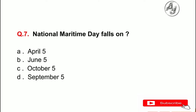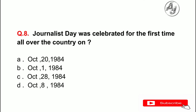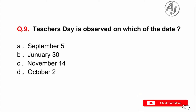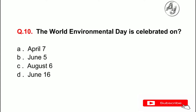Question number 7: National Maritime Day falls on — the answer is A — April 5. Question number 8: Journalist Day was celebrated for the first time all over the country on — the answer is October 28, 1984. Question number 9: Teacher's Day is observed on which date? The answer is A — September 5. Question number 10: The World Environment Day is celebrated on — the answer is B — June 5.